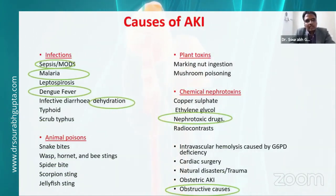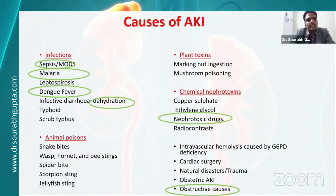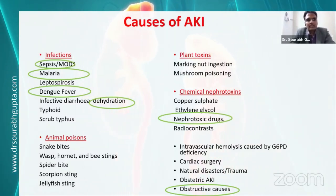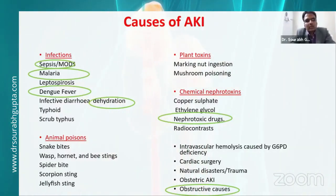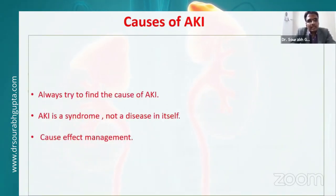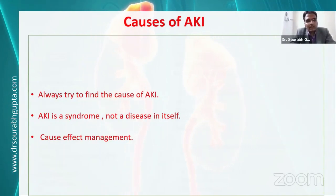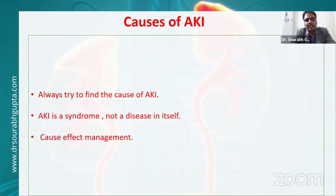The most common causes include sepsis, tropical infections, dehydration, nephrotoxic drugs, and obstructive causes. One can classify as pre-renal, renal, and post-renal, but common specific etiologies include sepsis, malaria, dengue, dehydration, nephrotoxic drugs, cardiac surgeries, and multifactorial AKI. This definition and classification of AKI doesn't tell you the cause, which has important prognostic significance. Always try to find the cause of AKI because it is a syndrome, not a disease itself, and its cause affects its management.